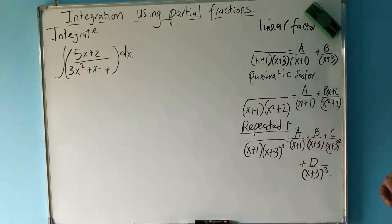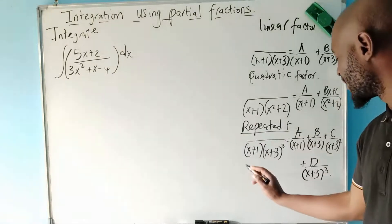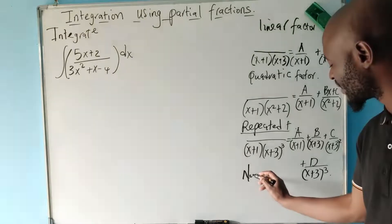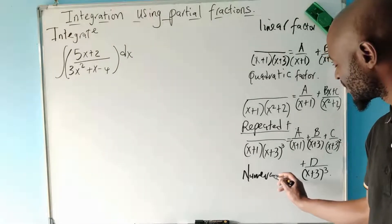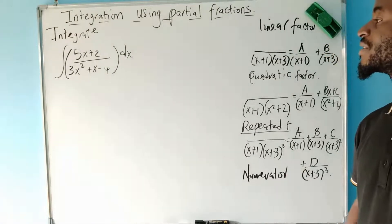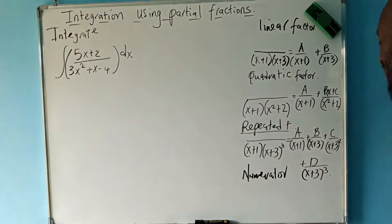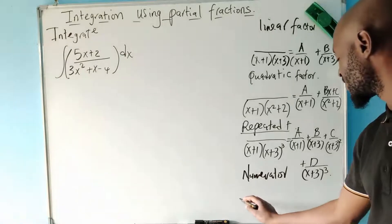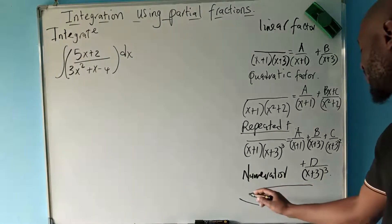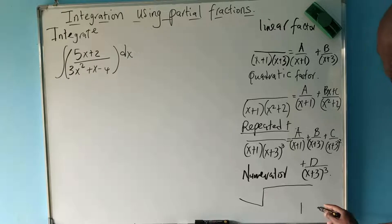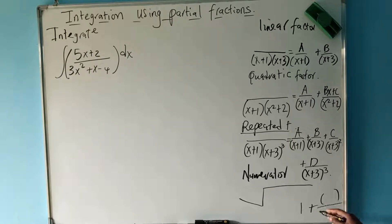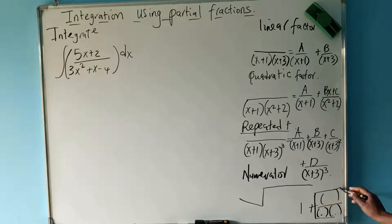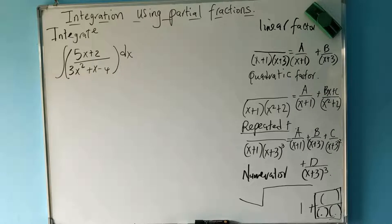The other thing to keep in mind is if the power in the numerator is equal to or more than the power in the denominator, then you would need to use long division. You divide, and you may end up with something like one plus a remainder over the denominator. Then you factorize the denominator and apply partial fractions again, and it may fall into any of the three categories.